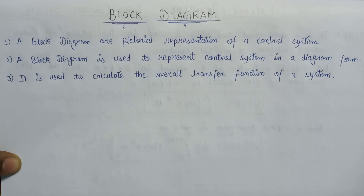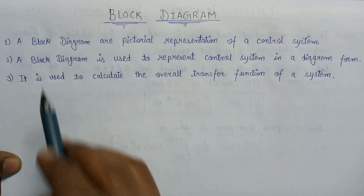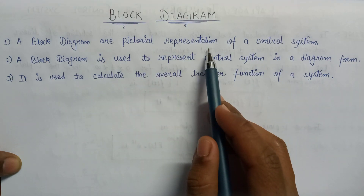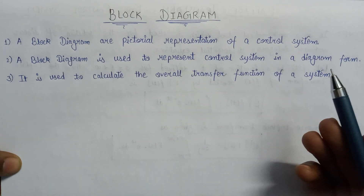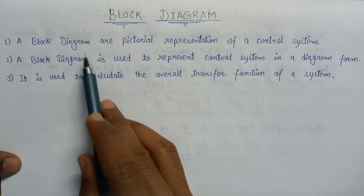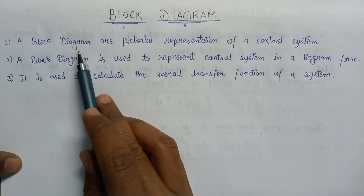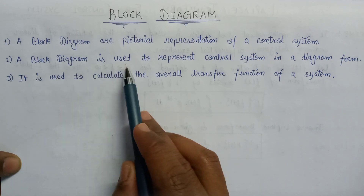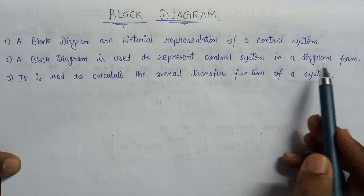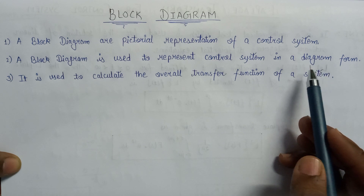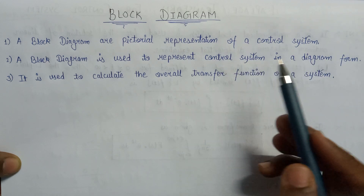Welcome to the control system playlist. In this lecture we are going to learn about a new concept: the block diagram. A block diagram is a pictorial representation of a control system. We will represent our control system in pictorial format by the help of a block diagram, which is used to represent a control system in a diagrammatic form.